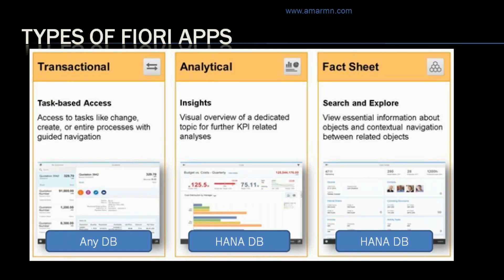This is our last slide, where we will discuss the types of Fiori apps. There are three types: transactional, fact sheet, and analytical apps. Transactional apps let you perform transactional tasks such as creating a sales order by a sales representative or a leave application by an employee. Transactional apps were created to accomplish various business transactions and can run on any database, but will best run on an SAP HANA database.